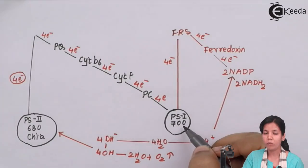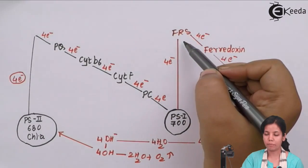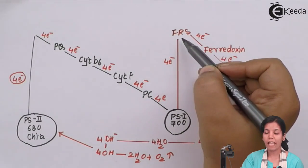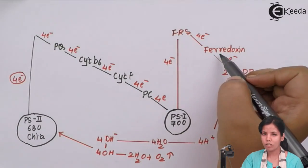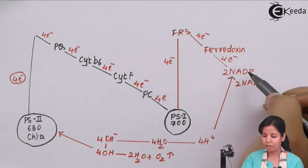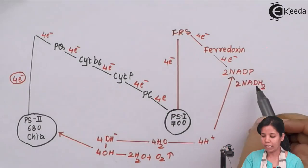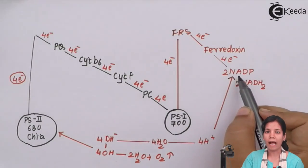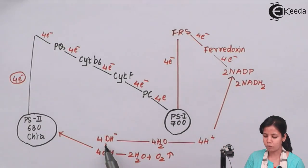In this, the electron passes to various electron acceptors. The first one is FRS which is ferredoxin reducing substance, then the electron is passed to ferredoxin, and finally the ionization of NADPH2 takes place, that is nicotinamide adenine dinucleotide phosphate is formed. During this reaction, photolysis of water takes place which further helps in ionization of NADPH2.